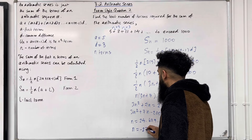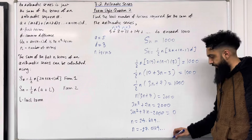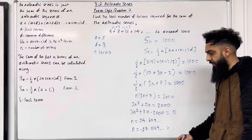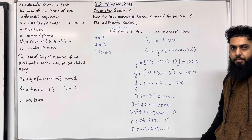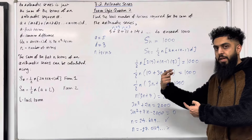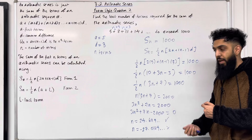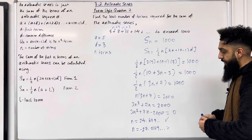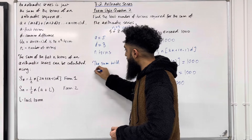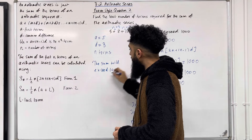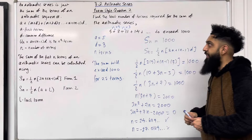We cannot have a negative or decimal number of terms. Since N equals 24.679, including the 25th term means the sum will exceed 1000. Therefore the sum will exceed 1000 for 25 terms. That completes exam style question 2.